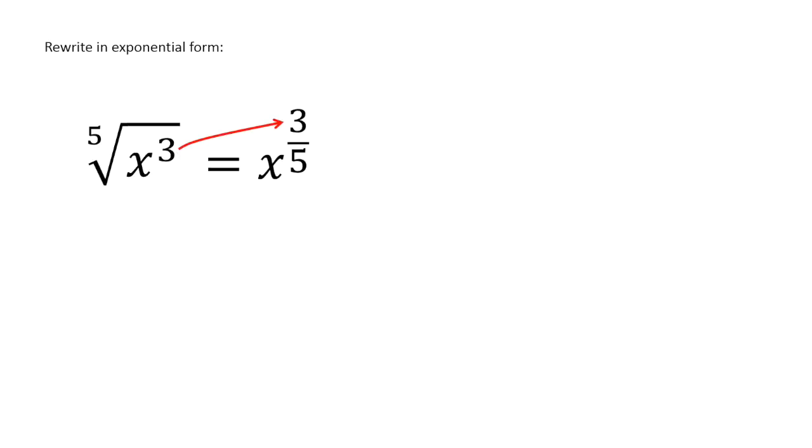So it doesn't sound too complicated. Just remember that whatever the 5 is, the one that's out in front here, this root, this is the 5th root, that one will go on bottom. Whatever is on the inside will go on top. So let's look at a couple other examples here.